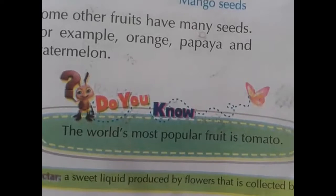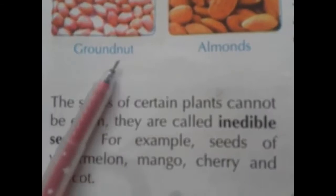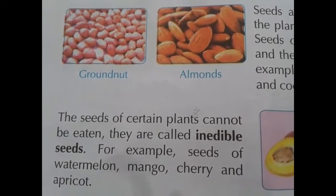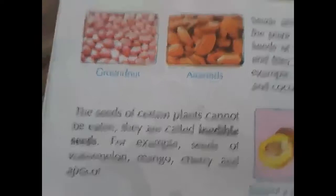Next, we are going to learn about seeds. See the picture — groundnut and almonds. With groundnuts, we eat along with jaggery. It gives strength to us.